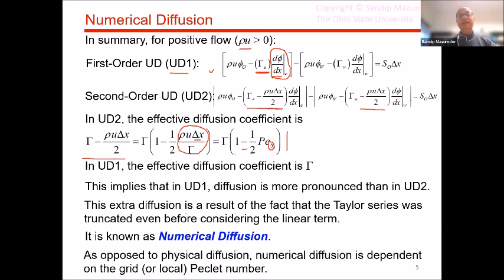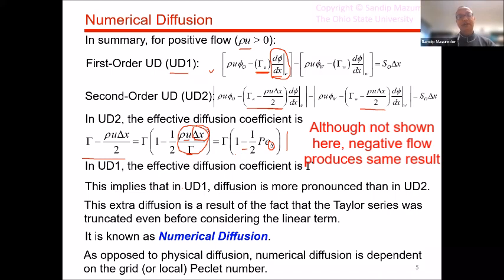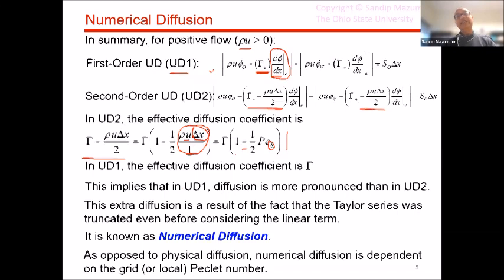This extra numerical diffusion is dependent on the grid Peclet number. Three things come in: grid spacing (a coarser grid means more numerical diffusion), flow velocity relative to the diffusion coefficient (higher flow speed means higher numerical diffusion), and non-dimensionally it depends on the local Peclet number. If the Peclet number is high — analogous to a higher local Reynolds number in momentum transport — you get more numerical diffusion.